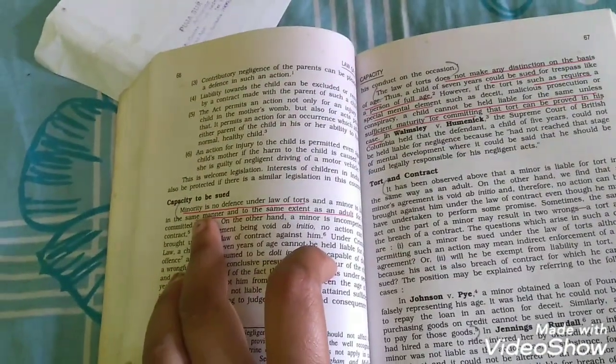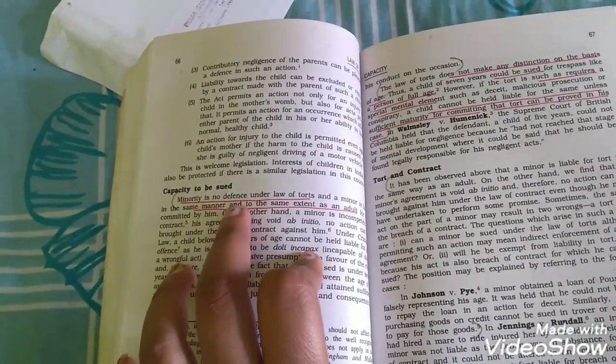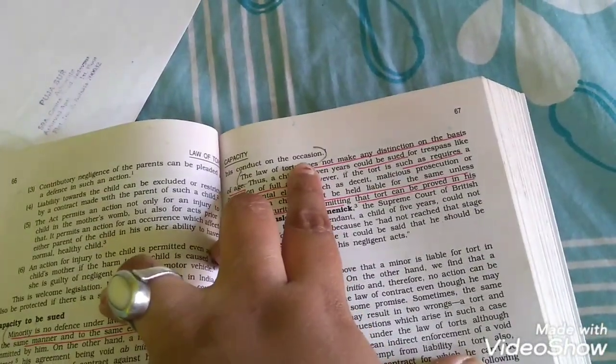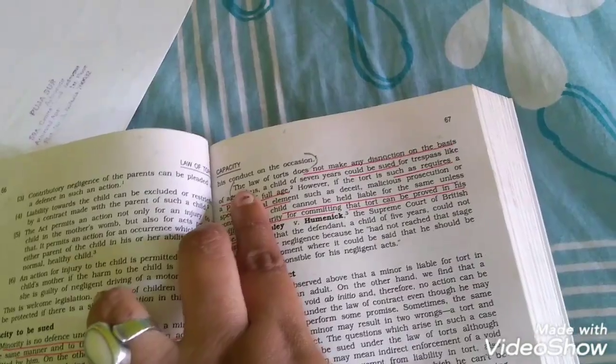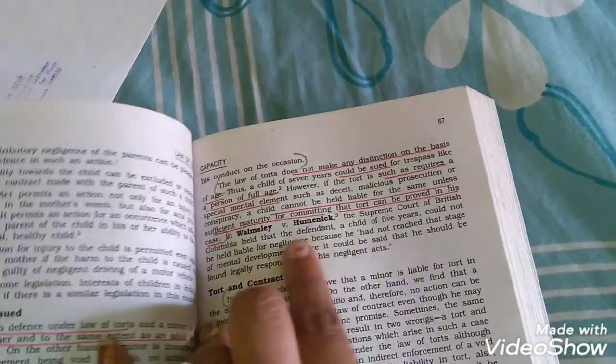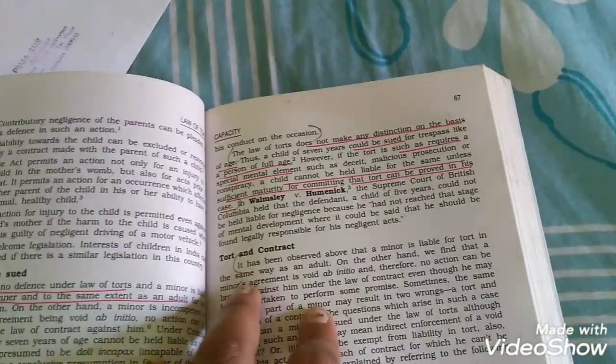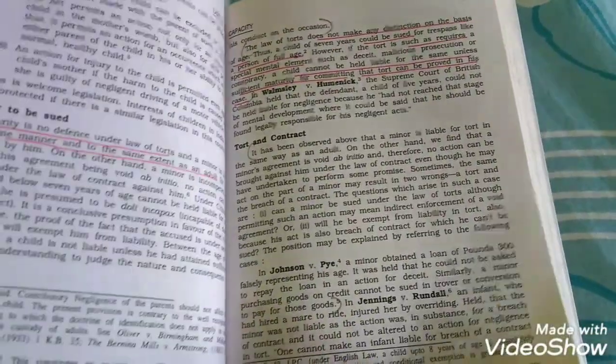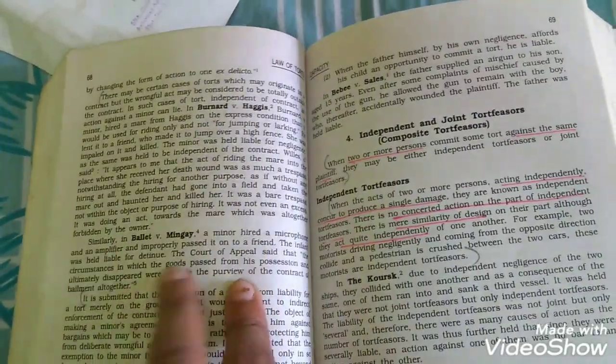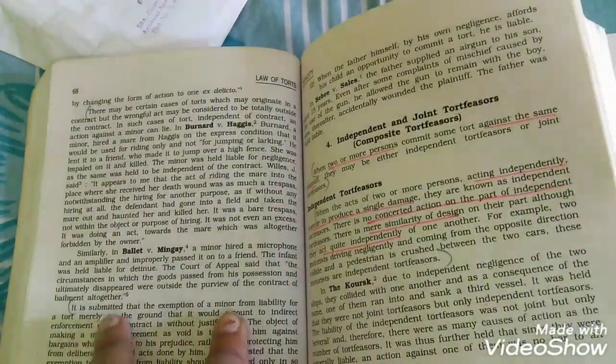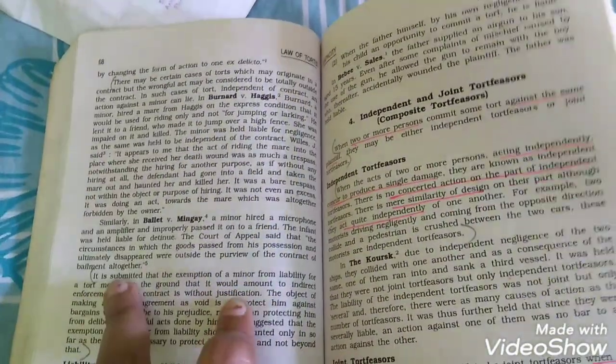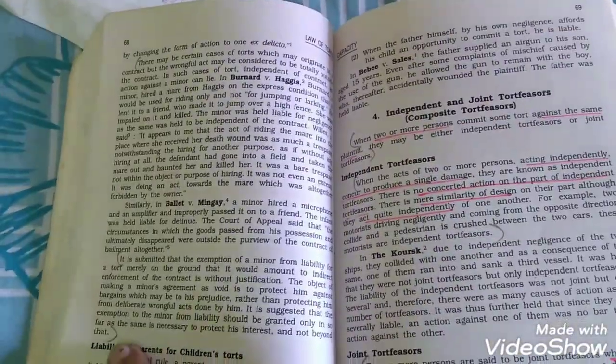Capacity to be sued: a minority is no defense from there to obligation. From 'the law of tort does not make' from there to case tort and contract. It has been from there to for those goods. There may be certain cases from there to 'I cannot find myself altogether.' It is submitted from there to that. Come to next page.